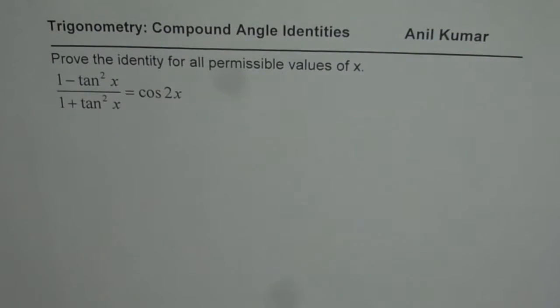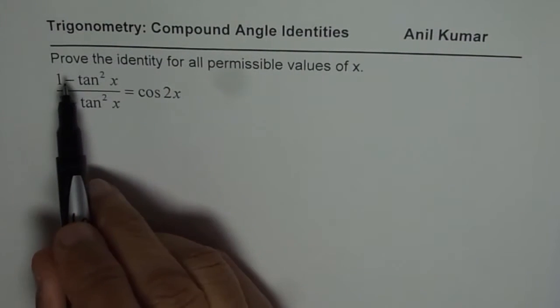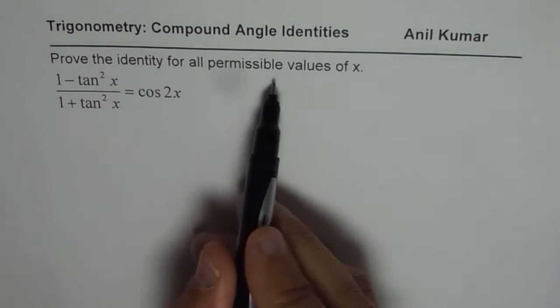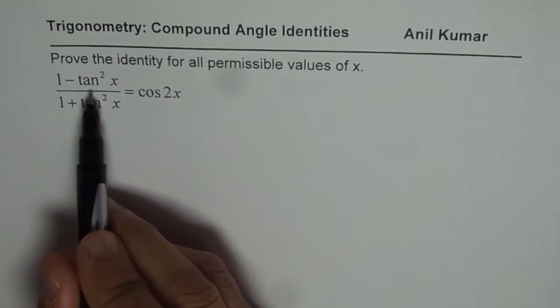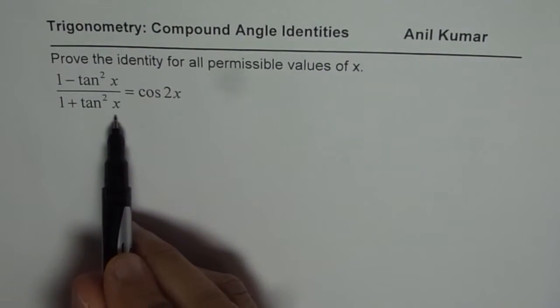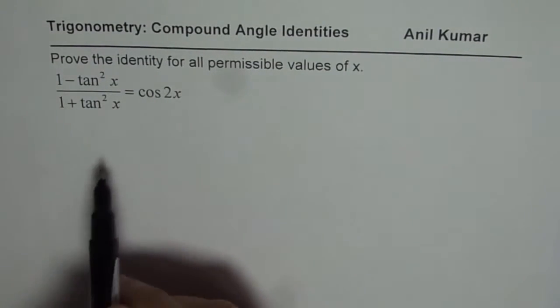I am Anil Kumar and now let us see how to prove trigonometric identity involving compound angles. So we have to prove the identity for all permissible values of x: 1 minus tan square x divided by 1 plus tan square x equals cos 2x.